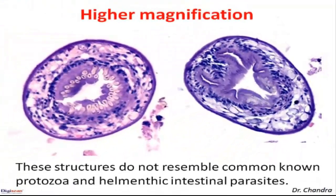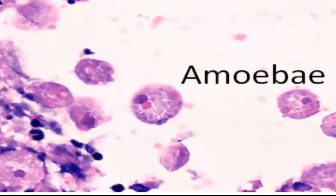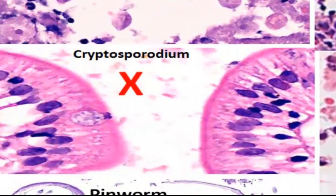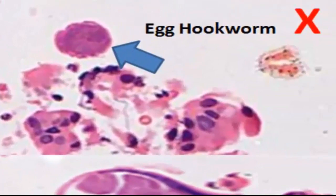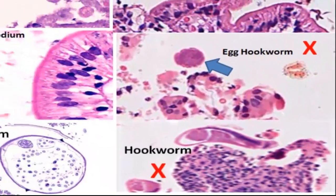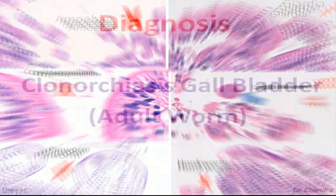These structures do not resemble common known protozoa and helminthic intestinal parasites. As we can see, here we have amoeba, giardia, cryptosporidium, egg of hookworm, cross section of pinworm, and adult hookworm. None of these structures resemble the structure we have seen in the gallbladder.